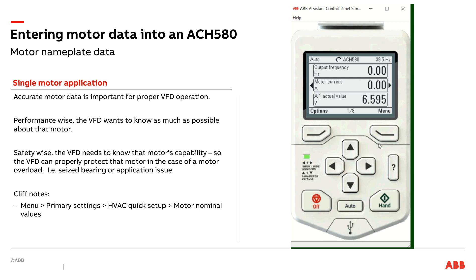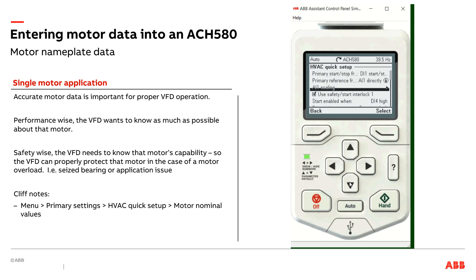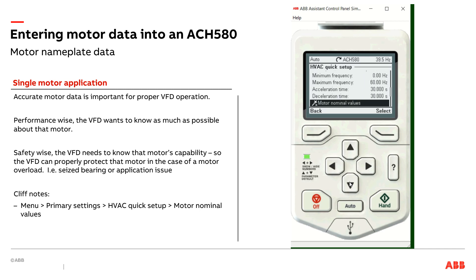I'm going to click on Menu, go to Primary Settings. I like to do a lot of my work whenever possible within the HVAC Quick Setup. So I'm going to go into the HVAC Quick Setup — a lot of my typical startup data is going to go into this area of the drive, and the motor data is a great example. So I'm going to scroll down here to Motor Nominal Values.